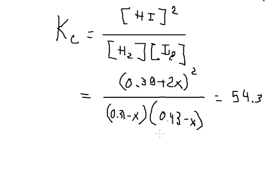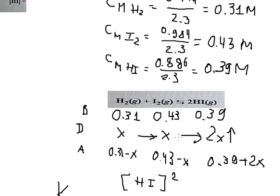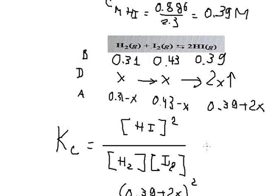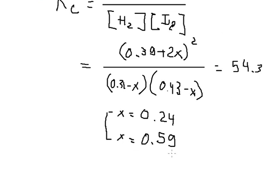After we calculate this one, we can get x equals 0.24 and x equals 0.59. If we select this one, we can see that 0.43 minus 0.59 gives a negative number, so we need to reject this one. We just use this one.